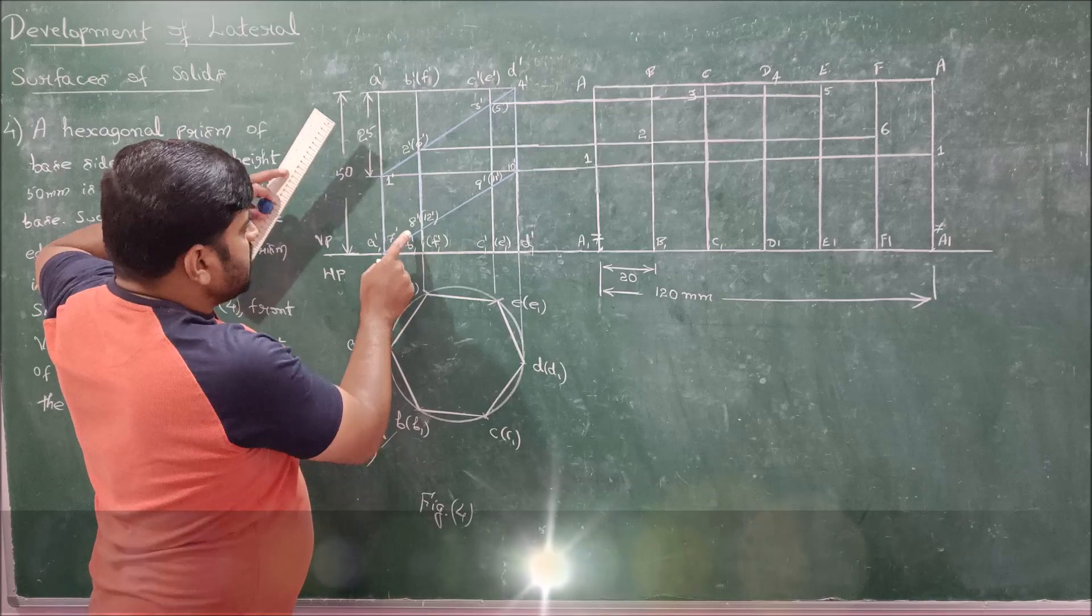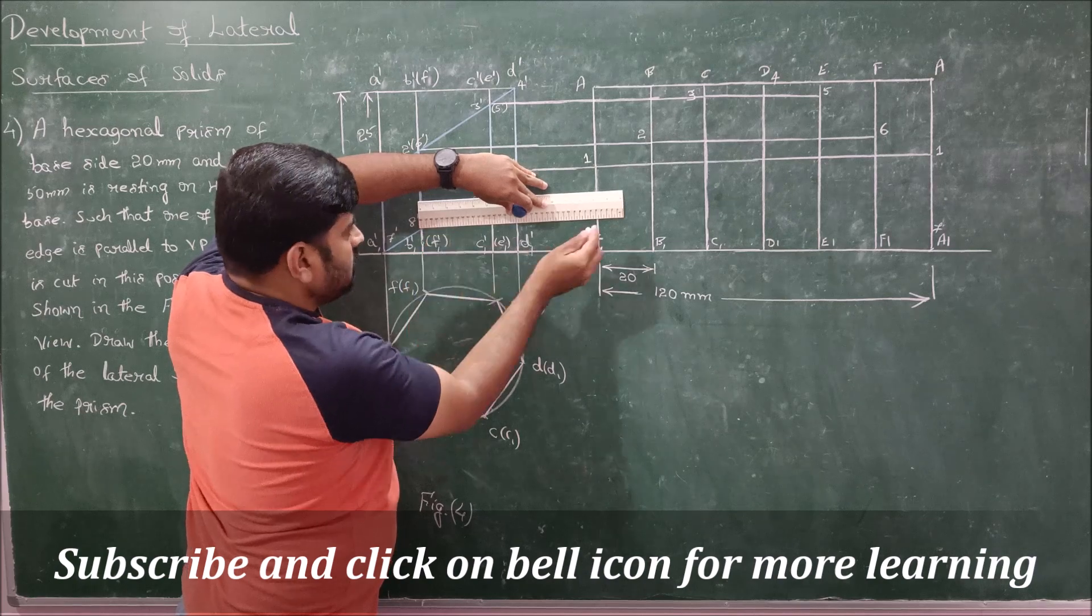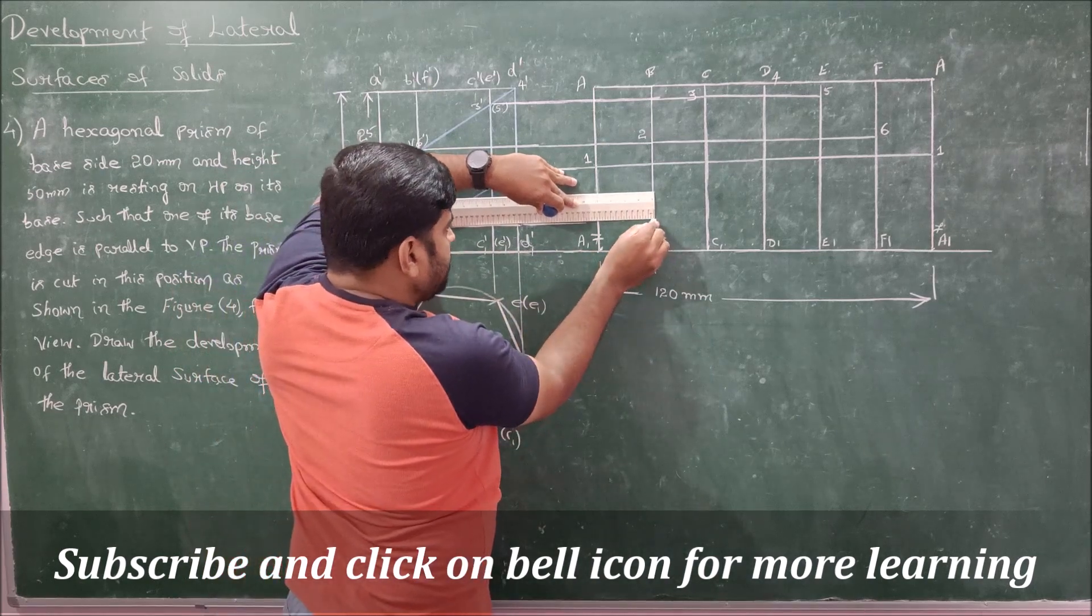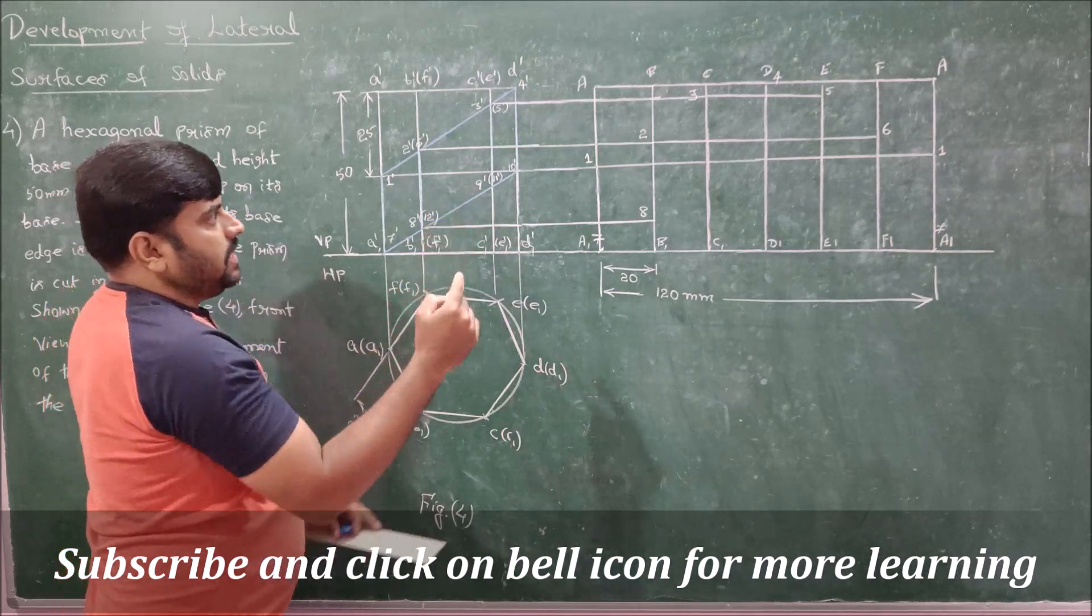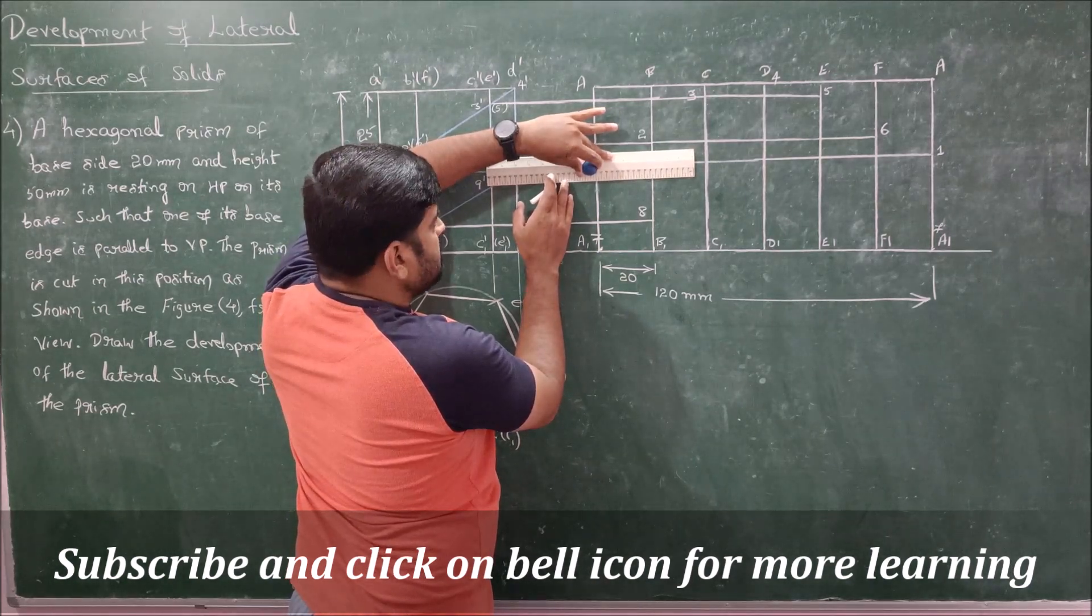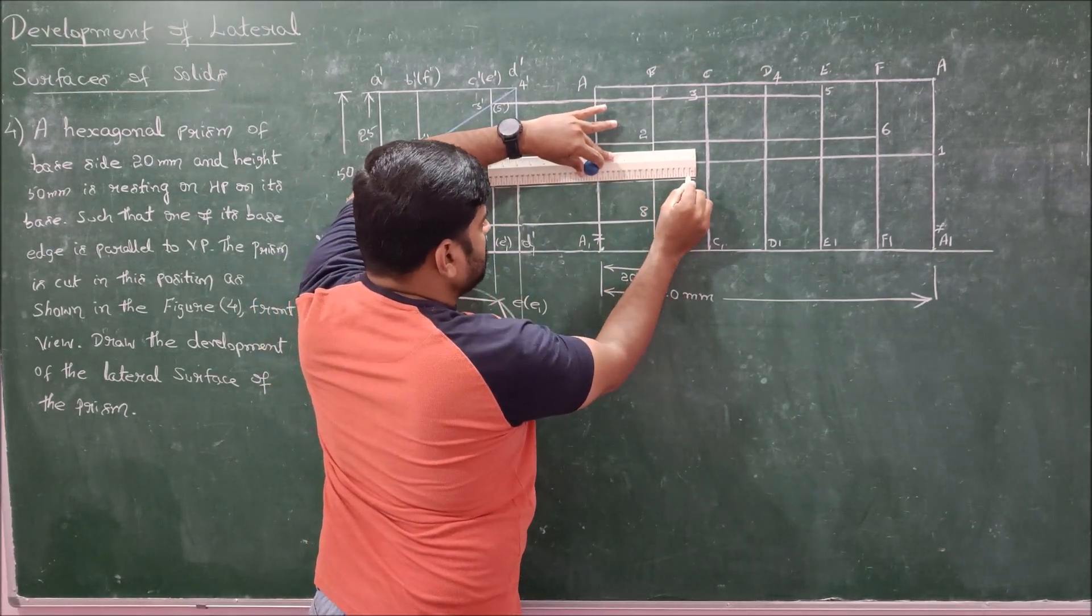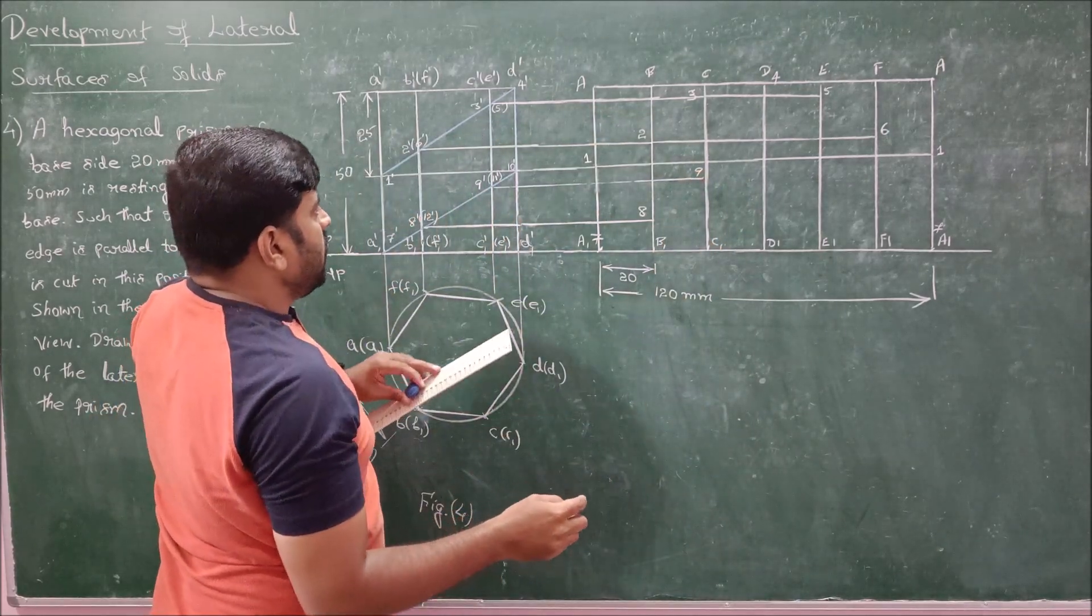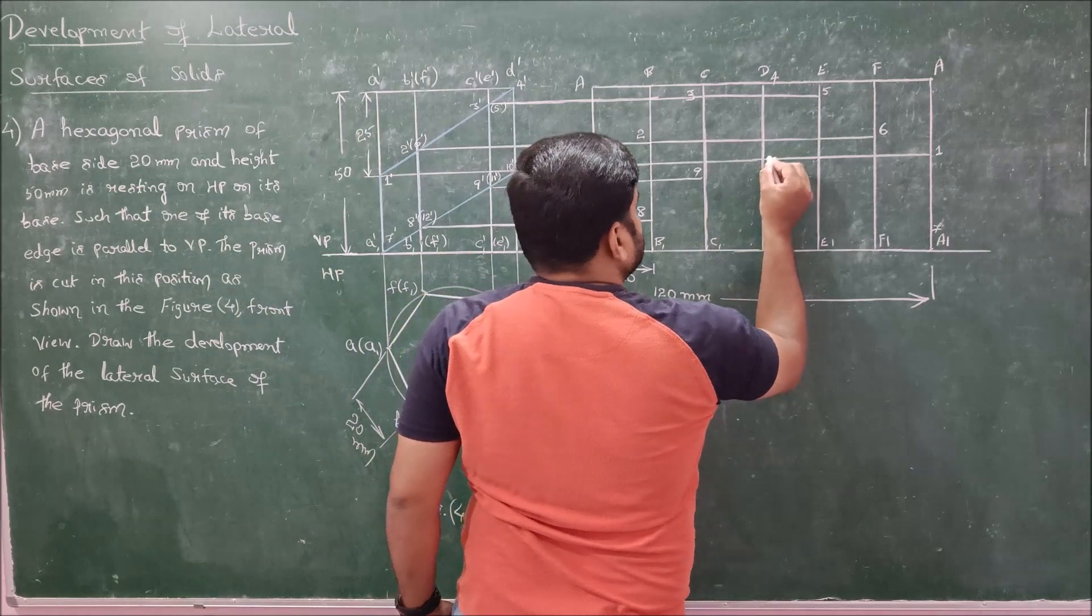Next for B1 dash B dash we have 8. Draw the parallel line so drawing the parallel line for B1 B I will get point 8 on B1 B. Next for C we have point 9. Draw the parallel line from C1 dash to point 9 to C1 C. If I do that, I will get point 9 here. Next point 10 is already done for D1 dash D dash. So this is going to be 10.